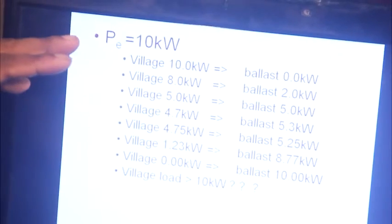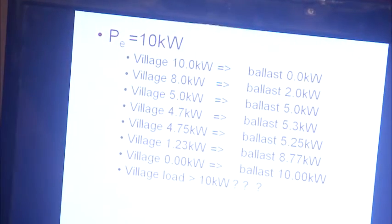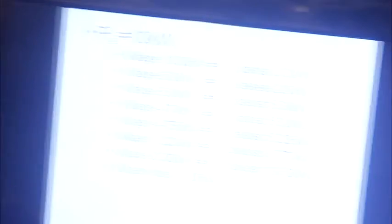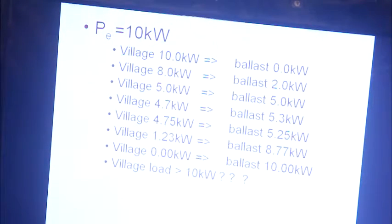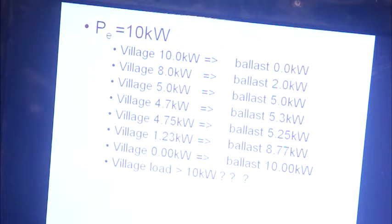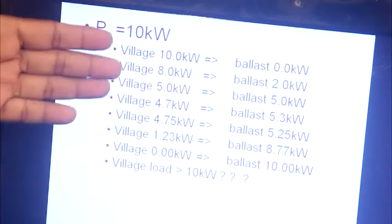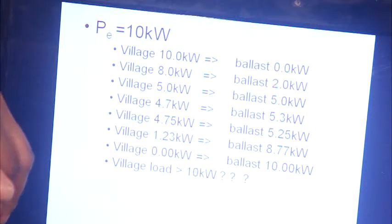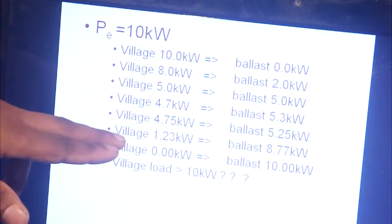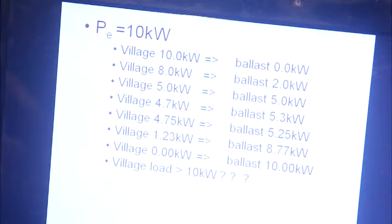Let's consider a 10 kilowatt hydropower project. If the village load is 10 kilowatt, the ballast excess power is 0 kilowatt, so no ballast is required. Whenever the village switches off 2 kilowatt, the village demand reduces to 8 kilowatt, and the ballast has to switch on exactly 2 kilowatt. If the village further reduces load to any value — 5 kilowatt, 4.7, 1.23, whatever — the ballast output should be exactly equal to the excess, so that village load plus ballast always equals 10 kilowatt.